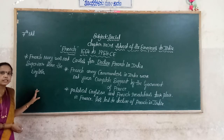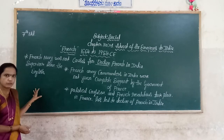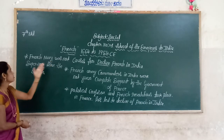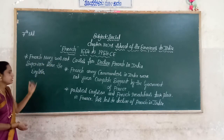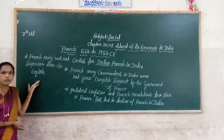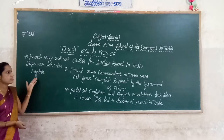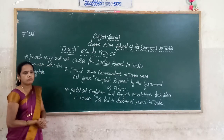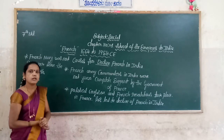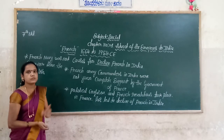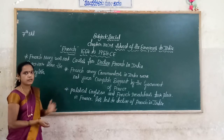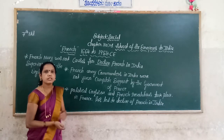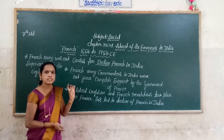These are all the causes for the decline of French in India. The English defeated the French in India. This is the first chapter — arrival of Europeans to India. The first Europeans to reach India were the Portuguese, second was the Dutch, third was the English, and the last was the French.